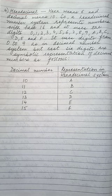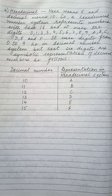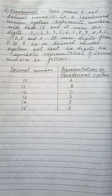As you can see in the following table, decimal number 10 is represented by capital A in the hexadecimal system. Similarly, 11 is represented by B, 12 is represented by C, 13 is represented by D, 14 is represented by E, and 15 is represented by F. The rest of the decimal numbers from 0 to 9 are represented by the same number in the hexadecimal system.